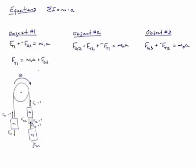If I look at object number 3, my first step is to subtract FG3 from both sides and then multiply both sides by negative 1 to get FT2 all by itself, which will leave me with the opposite of M3A plus FG3.